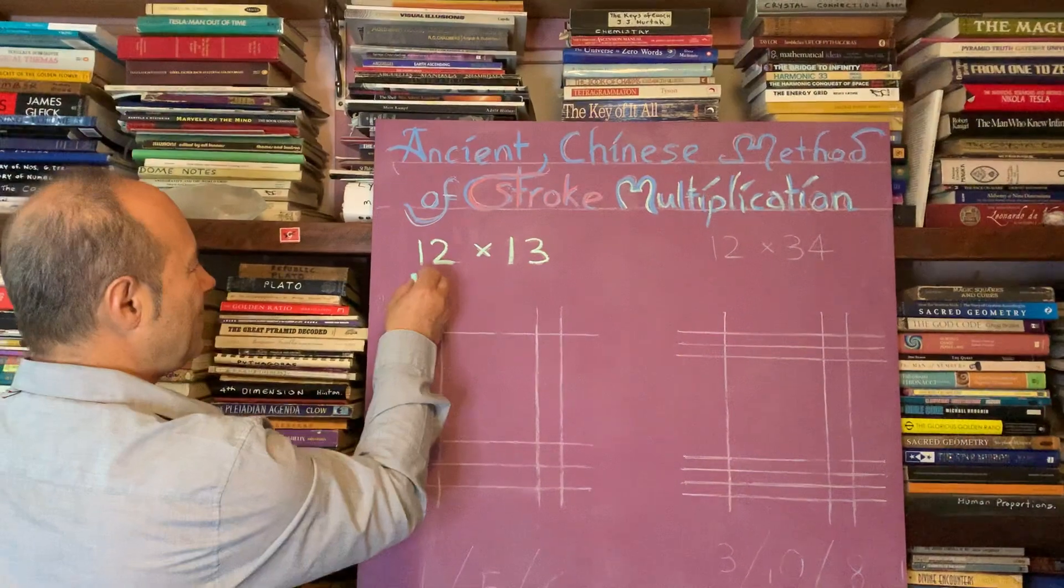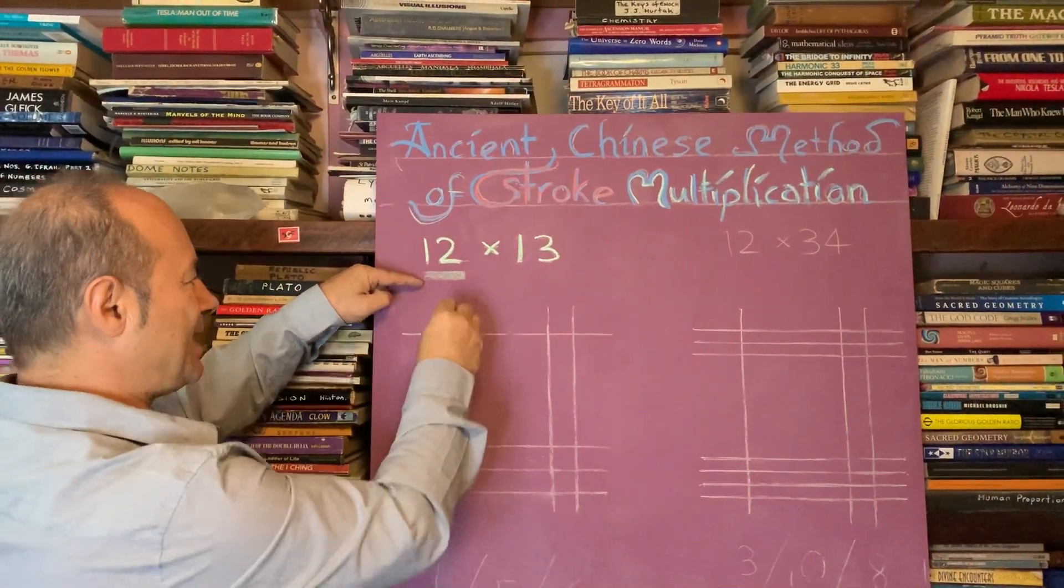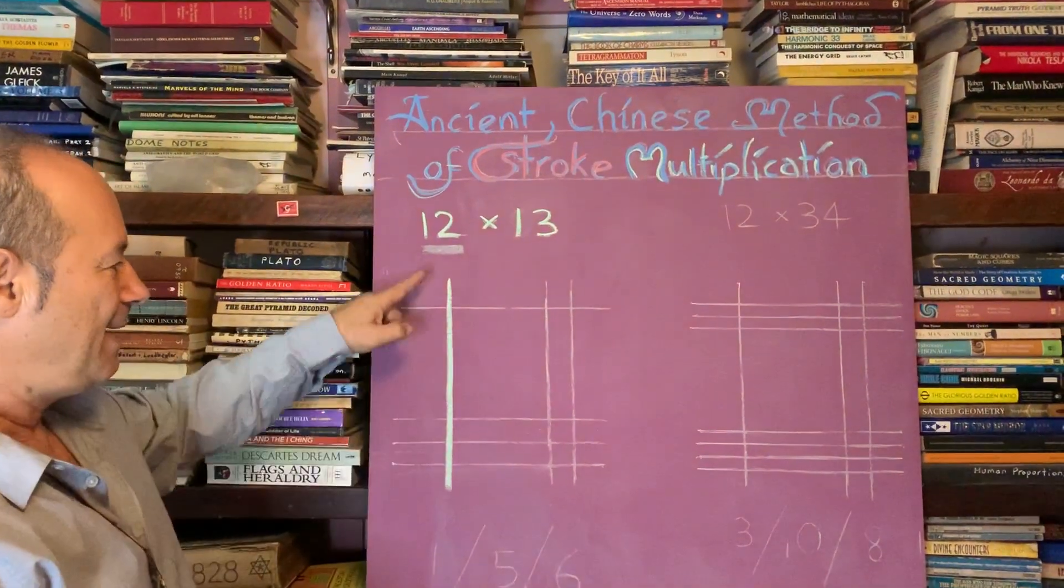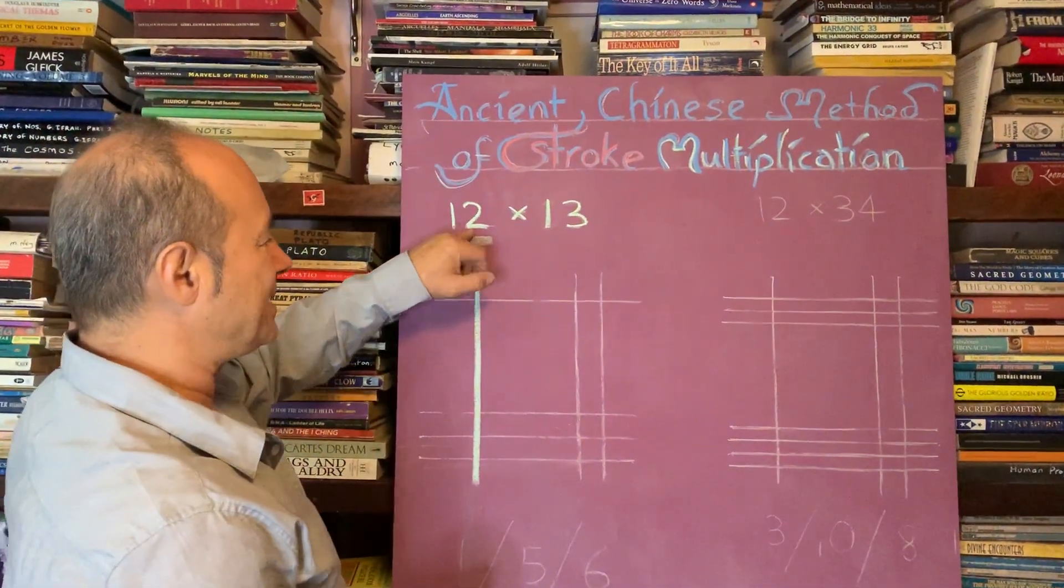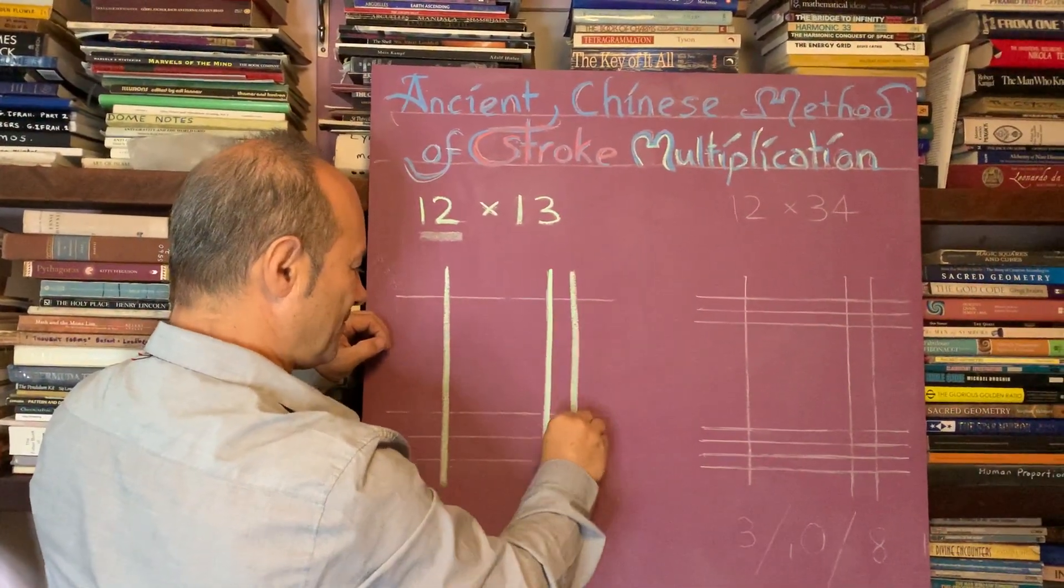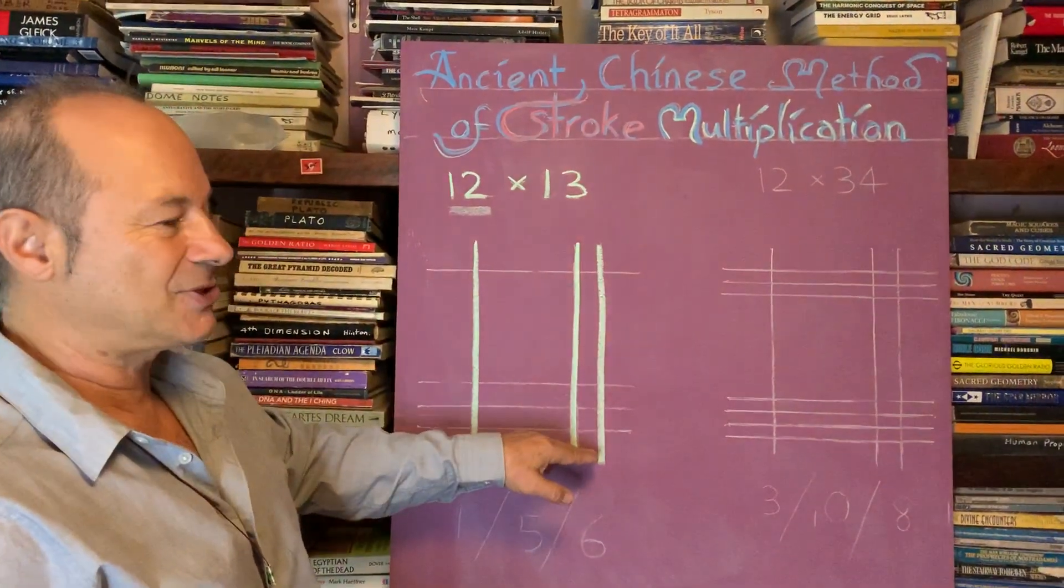So we're going to look at the number 12 here. So number 12 is, this is on base 10. So we know this value here is worth 10 points, but 12 is two more than 10. So over here, I'm going to put two bars. These are units. Okay, so that's 10 and that's the two, that's 12.